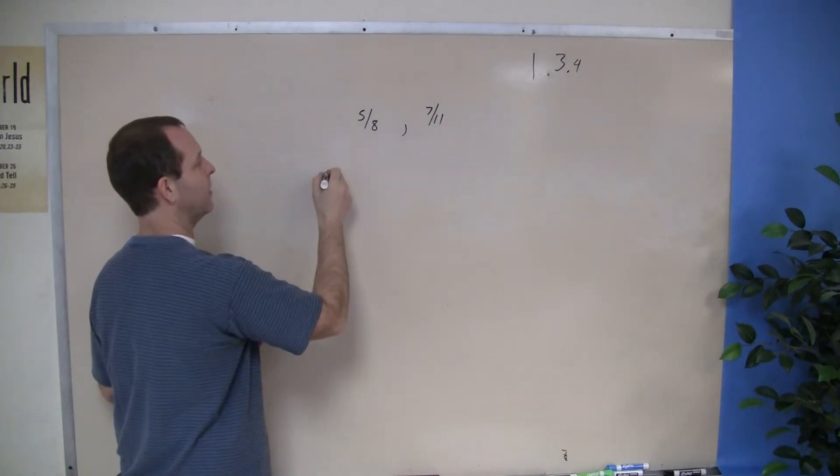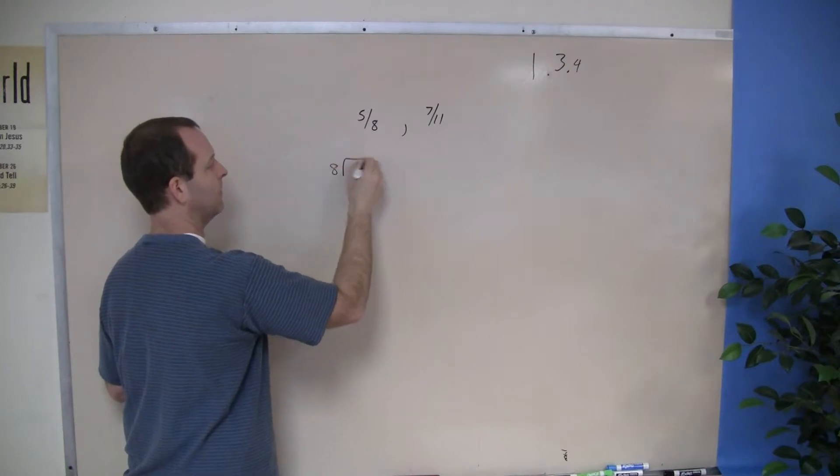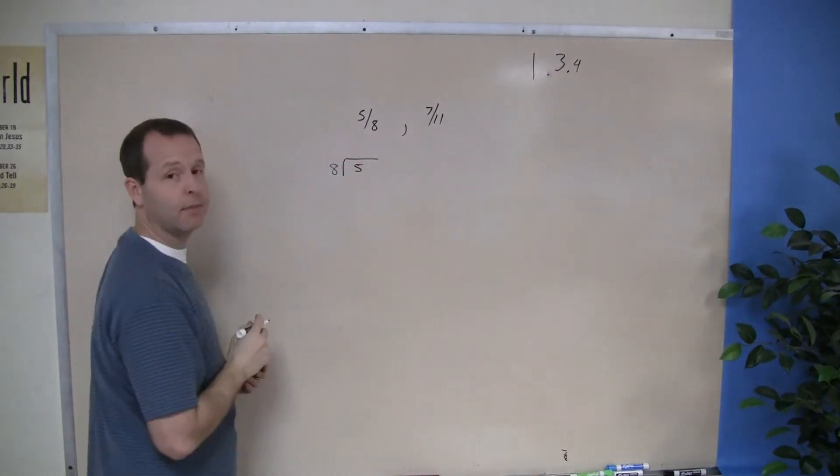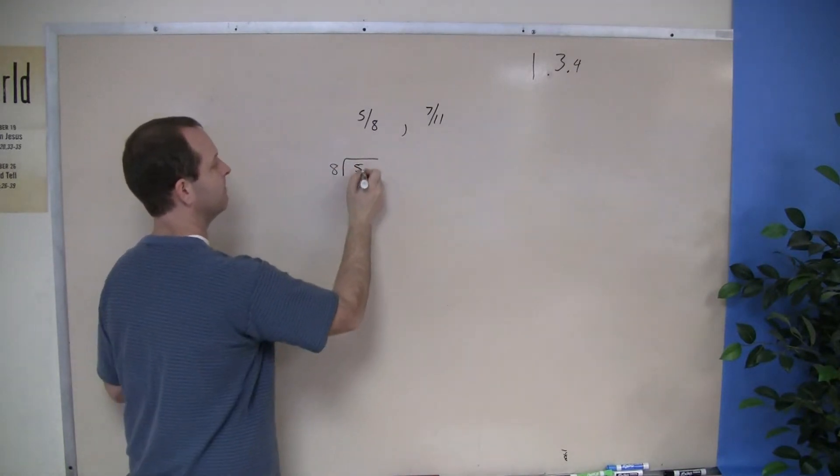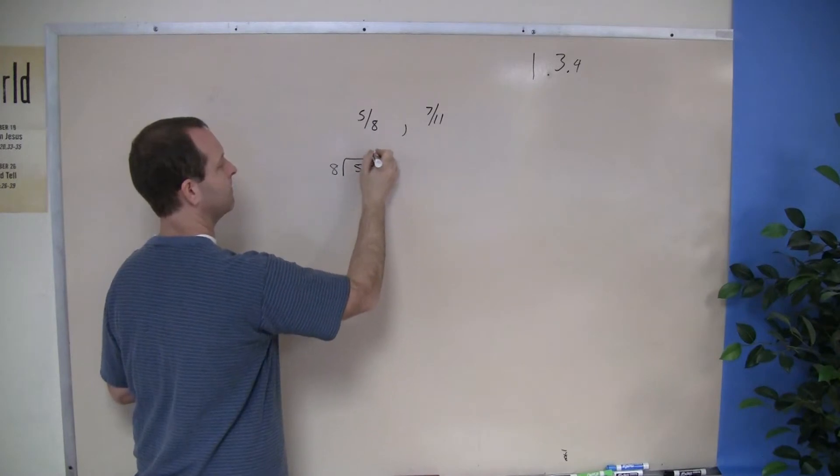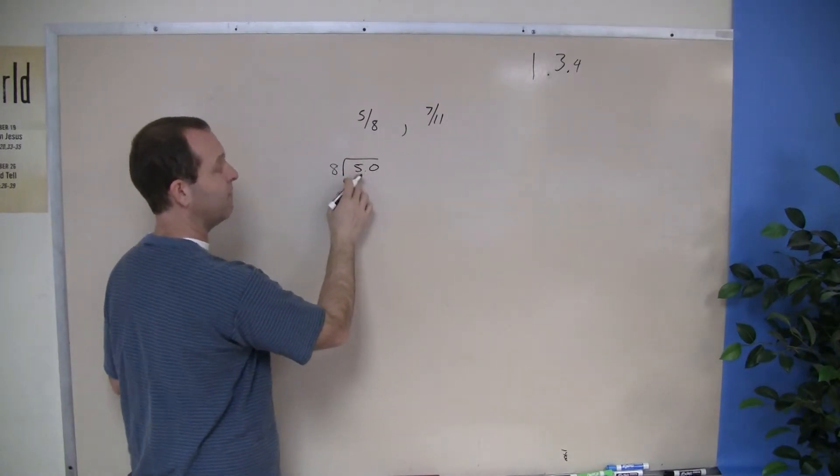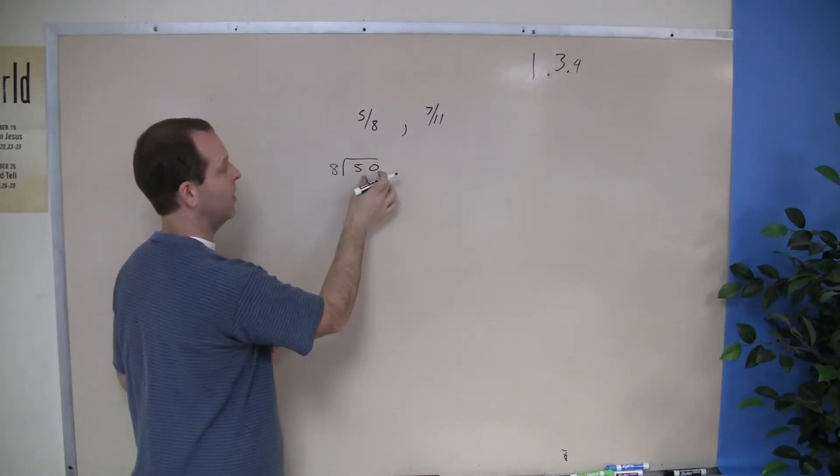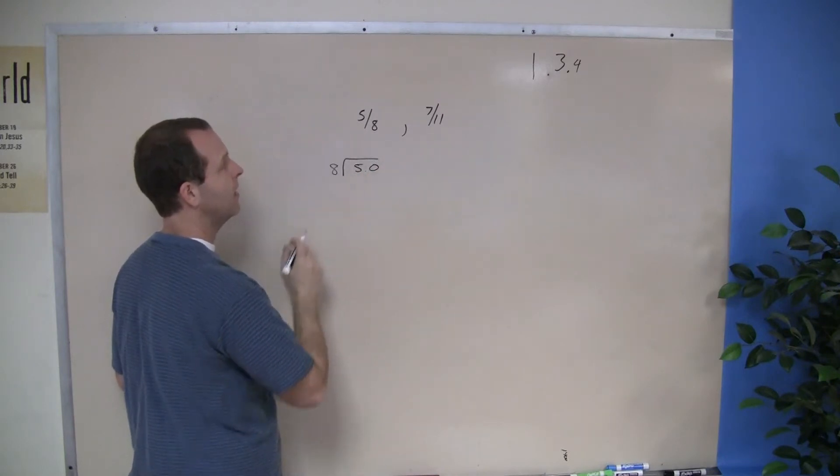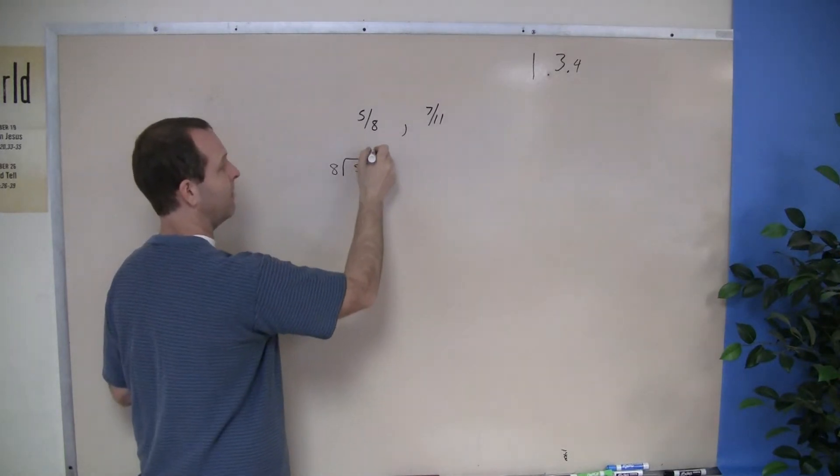And the way to do that is take the number on the bottom and divide it into the number on the top. 8 goes into 5 times, none, so I'm going to put a 0 there. 8 goes into 50, it goes in there 6 times.